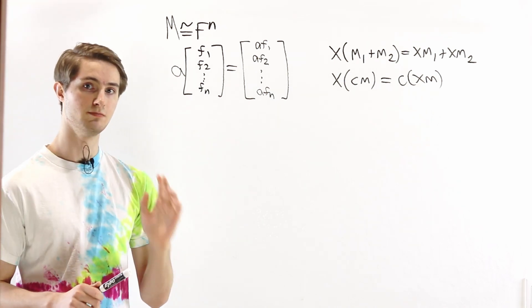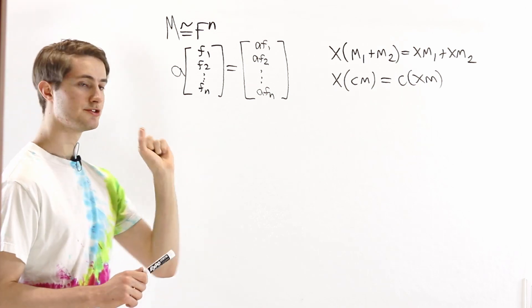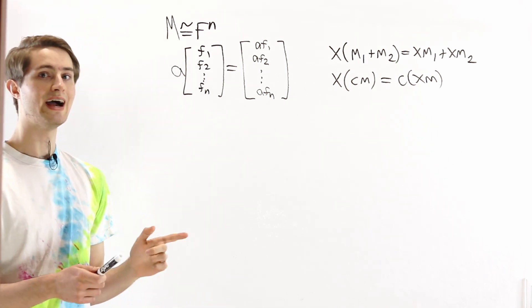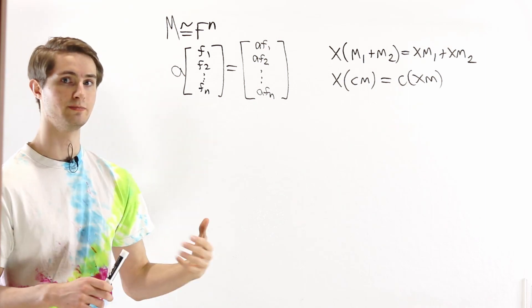So we can pick any linear transformation that we want to describe multiplication by x. So when we define an FX module, we choose one specific linear transformation, and we use that to describe multiplication by x.